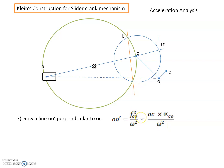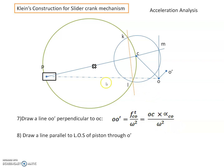We know that F_T(CO) equals radius of rotation OC multiplied by its angular acceleration alpha(CO). So OO' is drawn perpendicular to CO of this length. Next, we draw a line parallel to the line of stroke through O'. This line will intersect line KL at point N.